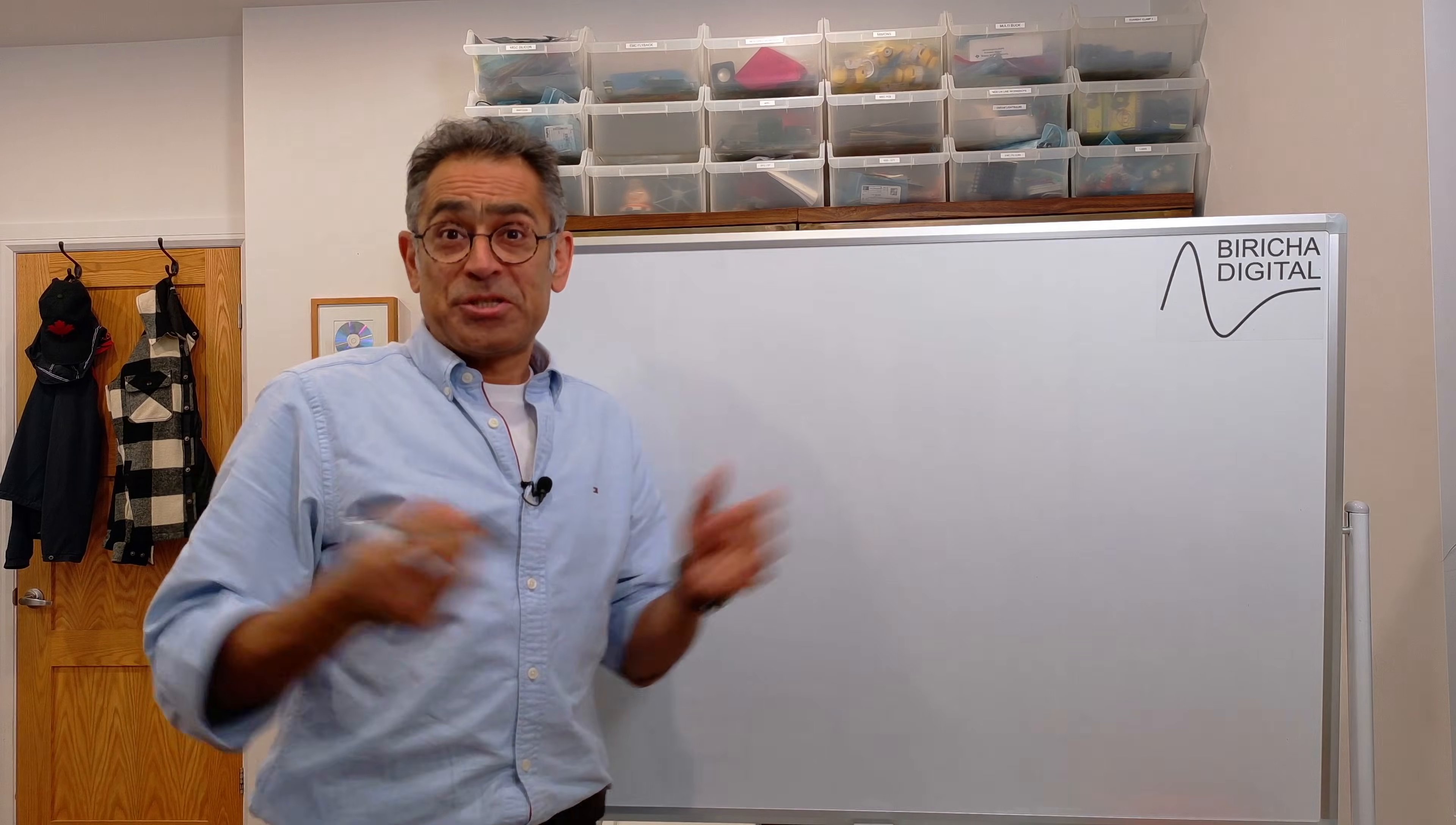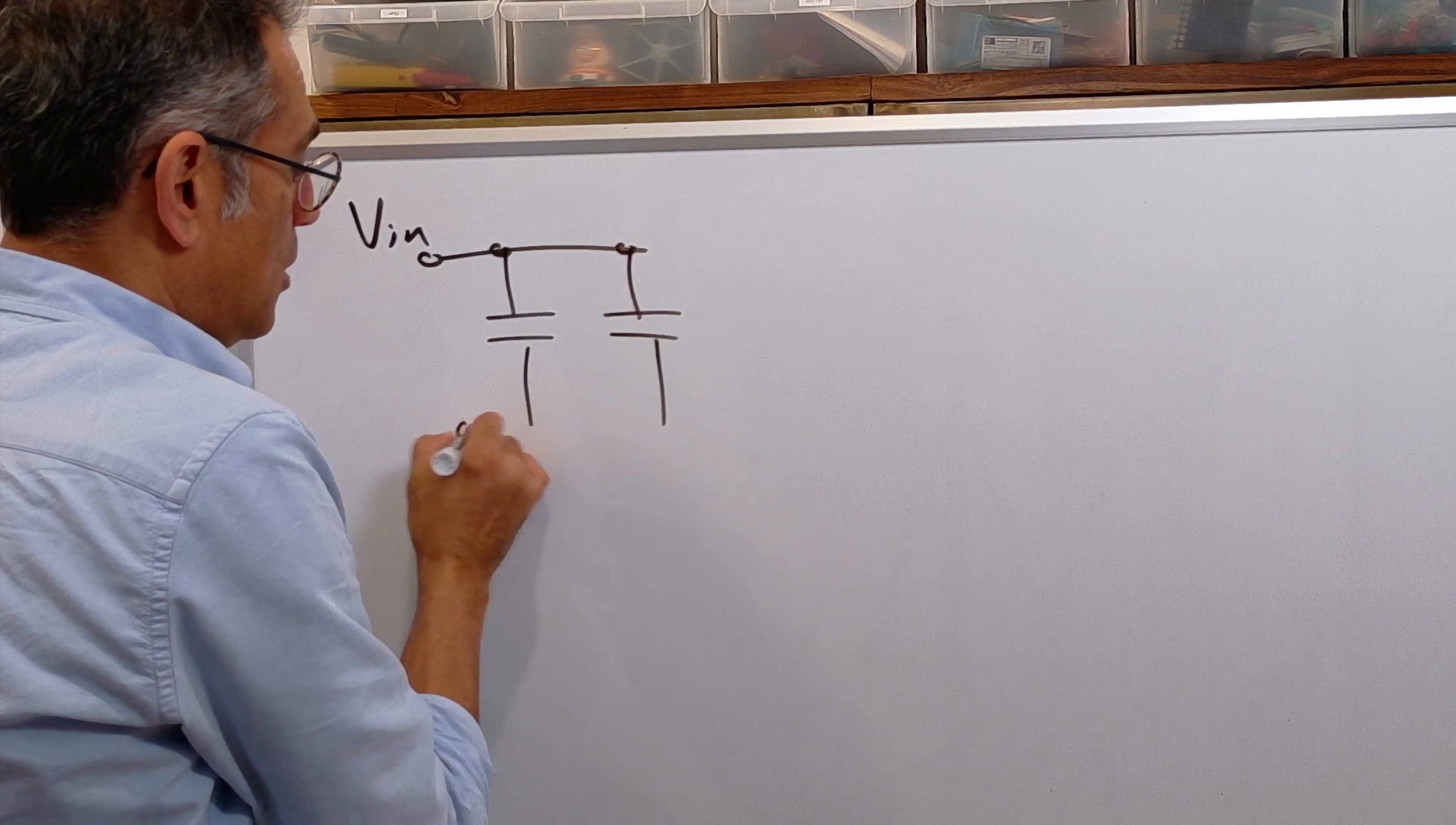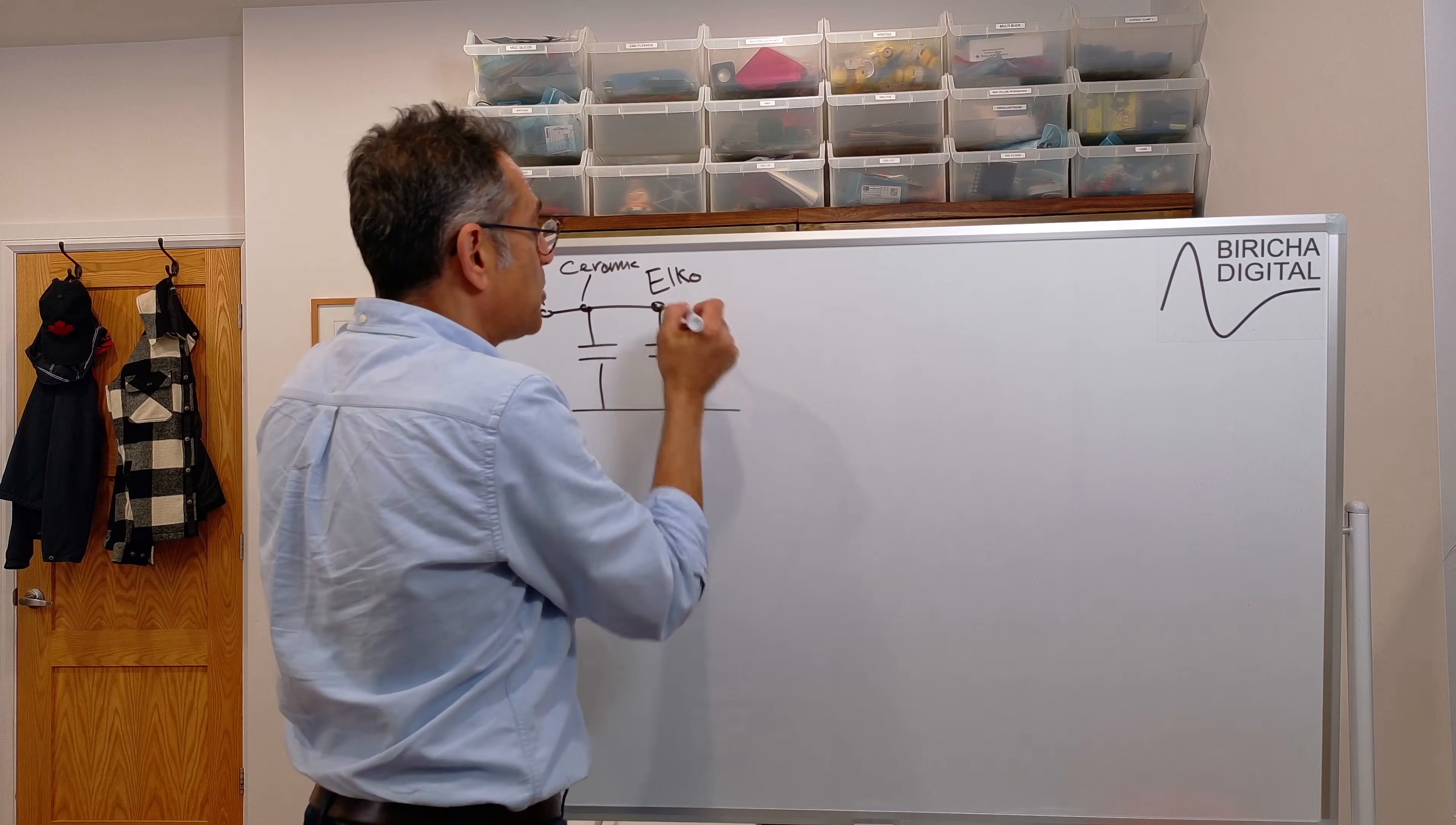Okay, so first let us start with the input capacitors. So here we've got the in, then you typically have a bank of capacitors. Usually you have some electrolytics, I'm going to call Elko, and some ceramics. And of course, we're going to learn exactly how to size these and how to select them as part of this workshop.